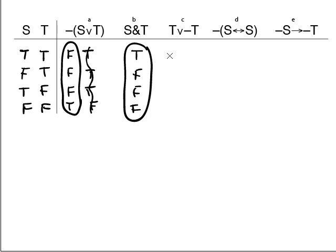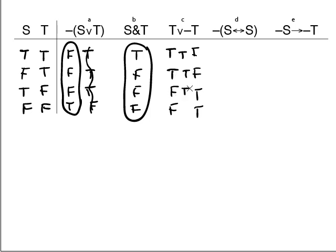T wedge dash-T. You probably know what this is already. Under T: true, true, false, false. Under dash-T: false, false, true, true — the opposite values. Wedge is true when either part is true: true wedge false is true, true wedge false is true, false wedge true is true, false wedge true is true. Yes, this formula is always true — let's circle that.